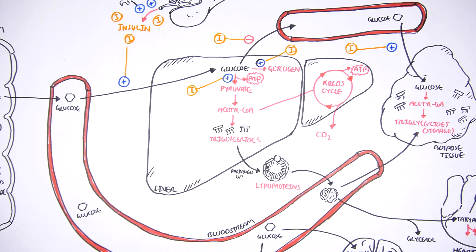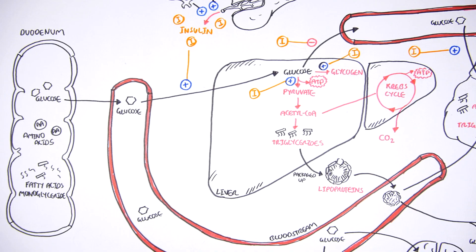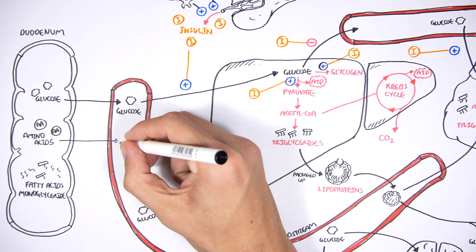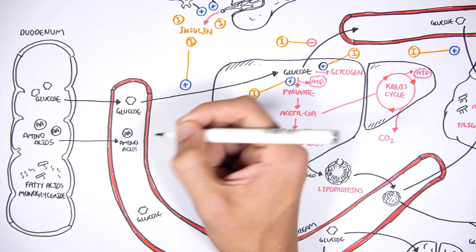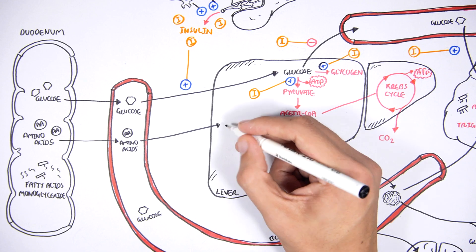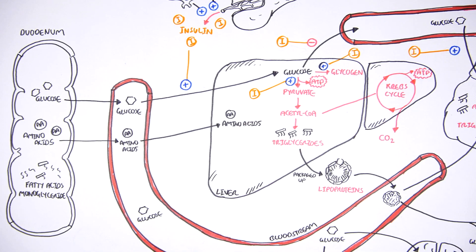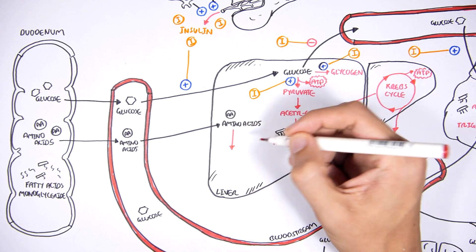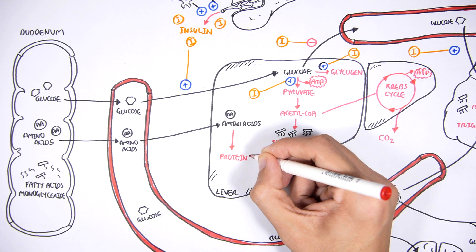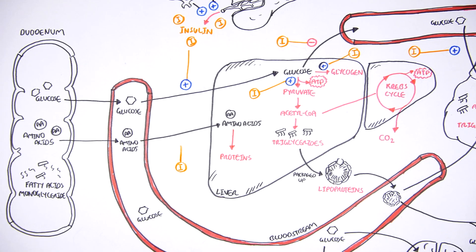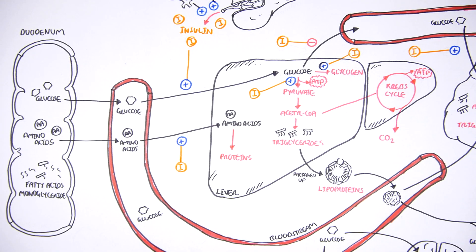Amino acids are absorbed into the blood just like glucose, and they are taken up by the liver to synthesize proteins. Insulin stimulates amino acid uptake from the blood to the liver.